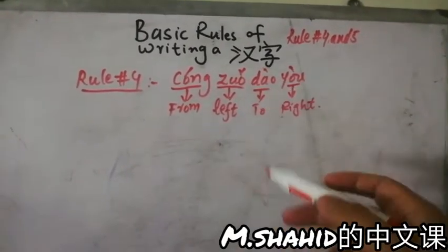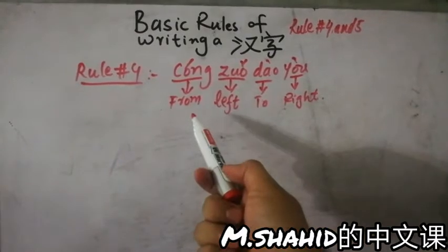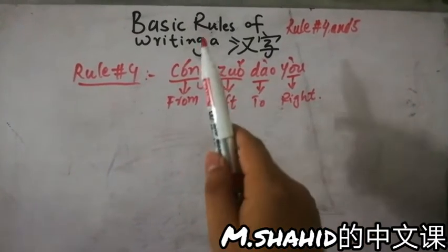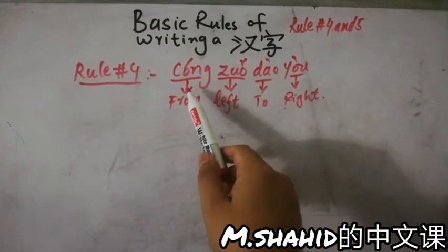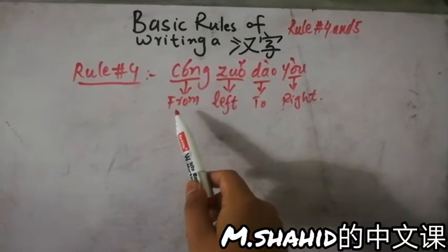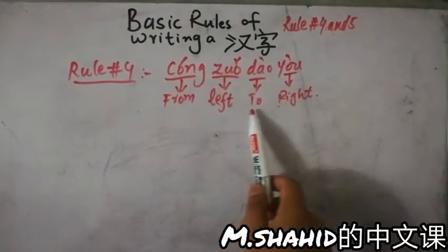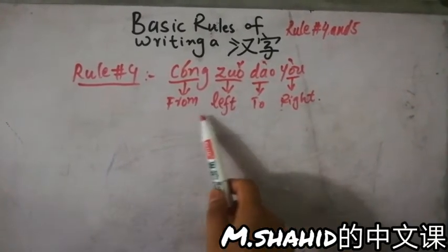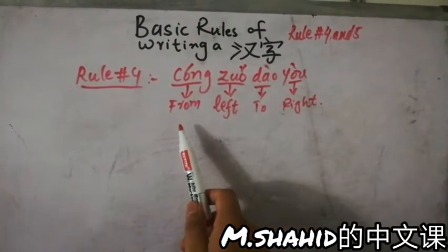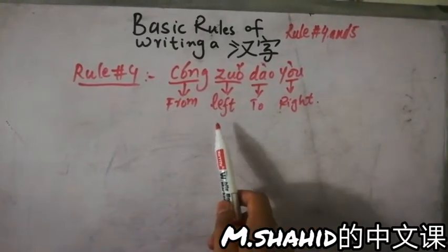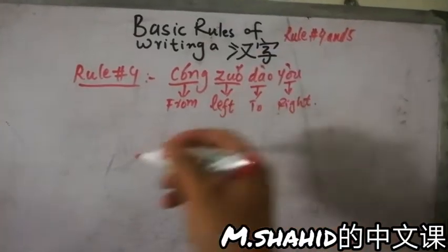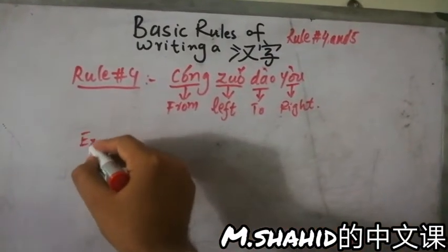So now you understood that if you write a Chinese character, you have to keep this in mind that you have to write the Chinese character from left to right. This order should be maintained. The Chinese character should be written from left to right. So let's just discuss some examples.